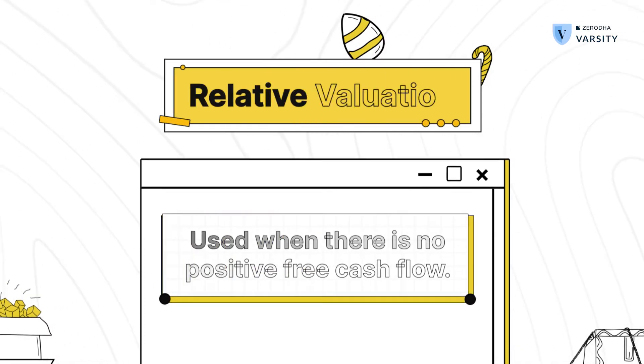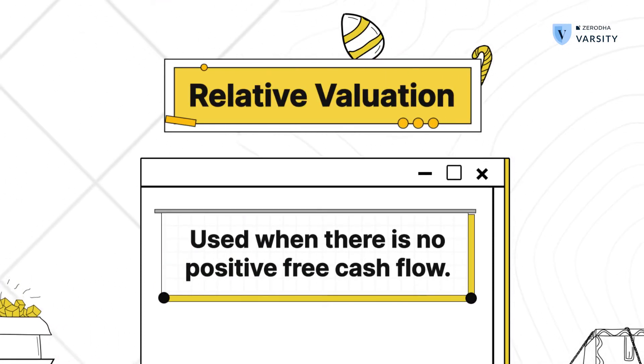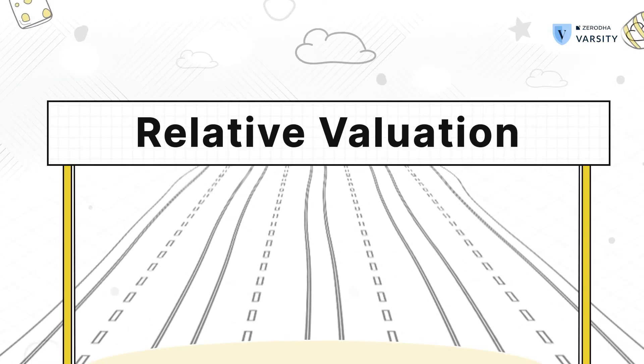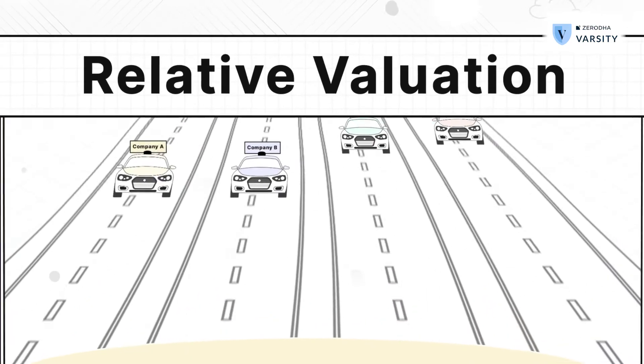The second technique is called the relative value technique. Investors use this when they can't apply intrinsic valuation — for example, if the company being valued does not have positive free cash flow, there is no way to apply a DCF or conduct an intrinsic valuation.